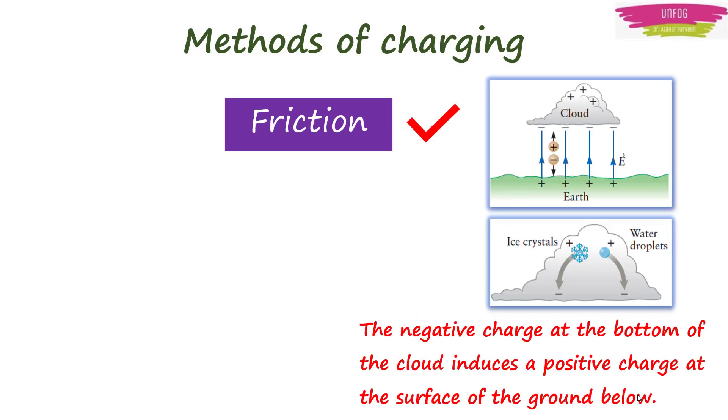During a thunderstorm, the top of a storm cloud is positively charged while its bottom is negatively charged. This negative charge induces a positive charge at the surface of the ground, and the cloud's charge is produced by the motion of water droplets and ice crystals as they are pushed along by the wind.